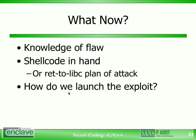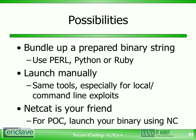Let's see how we go about doing the manual exploitation. We've got some knowledge of the flaw, we've got shellcode in hand, and all we need now is to launch the exploit. We've actually already got the tools. We can bundle it up and either create a single freestanding exploit, or if we're just interested in doing a proof of concept — for instance, if I'm developing this for Metasploit later — I don't really need a prepared binary. I just need the proof of concept, perhaps using something like Netcat, because if I can exploit it with Netcat, I can very easily turn it into a Metasploit exploit.